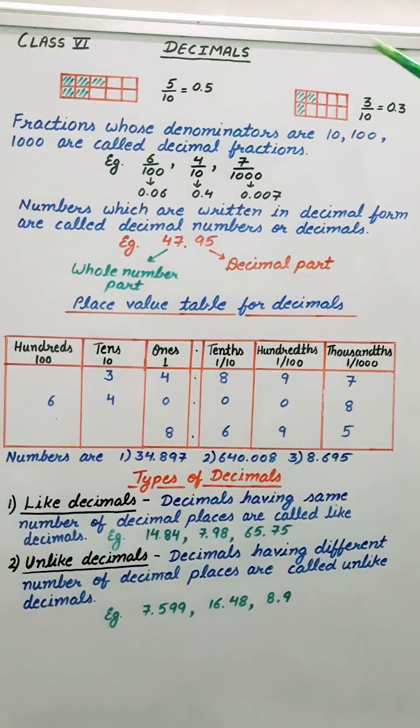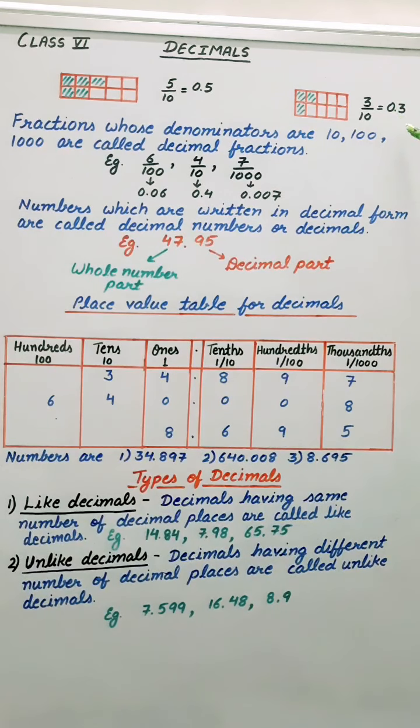Similarly, here 1, 0 is there in the denominator. So we will count 1 digit and put decimal. So 0.3.